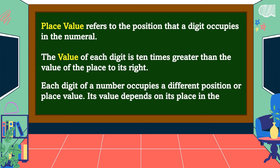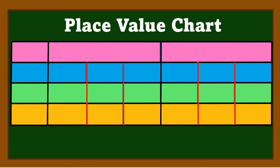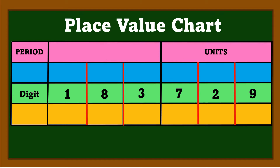Each digit of a number occupies a different position or place value, and its value depends on its place in the number. To fully understand our lesson, let's study the place value chart. In this place value chart, notice that the digits are grouped into sets of three. Each group of three digits is called a period.